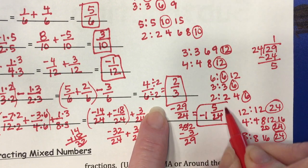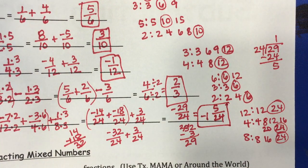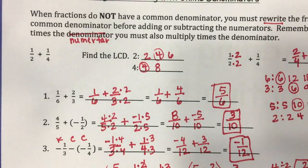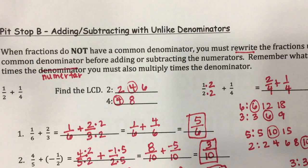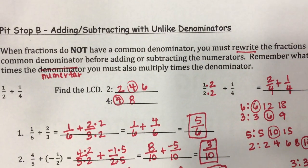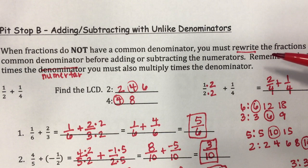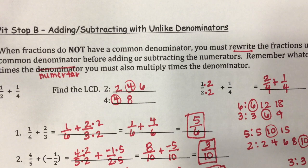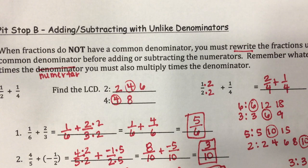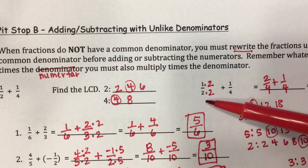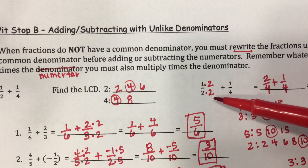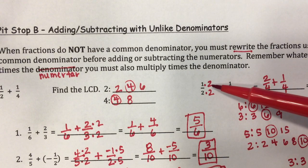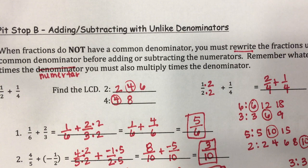This does not simplify, so my final answer is negative one and five twenty-fourths. That covers adding and subtracting with unlike denominators. The only difference from like denominators is you have to find the common denominator first by finding the least common multiple, and remember that whatever you multiply times the denominator to change it, you also have to multiply that same number times the numerator.